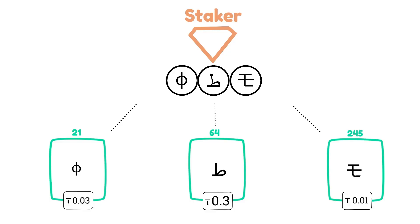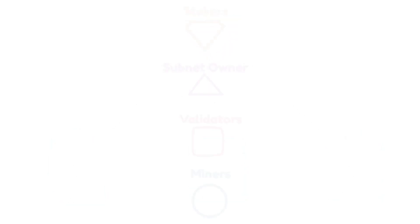Remember, before Dynamic Tau, participants got paid for their contributions in Tau. Now that every subnet has its own alpha token, miners, validators, subnet owners, and stakers are now paid in alpha for each subnet they're operating in.